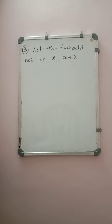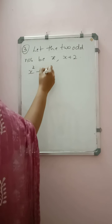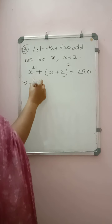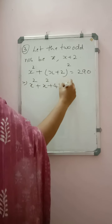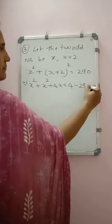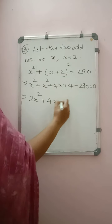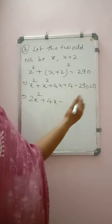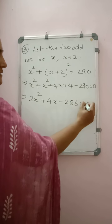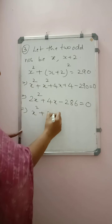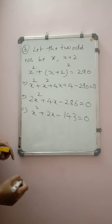In the question it was given: find two consecutive odd positive integers whose sum of squares equals 290. So x² + (x+2)² = 290. Simplifying: x² + x² + 4x + 4 = 290. Shifting to left hand side: 2x² + 4x + 4 − 290 = 0, giving 2x² + 4x − 286 = 0. All numbers are divisible by 2, so we divide by 2: x² + 2x − 143 = 0.